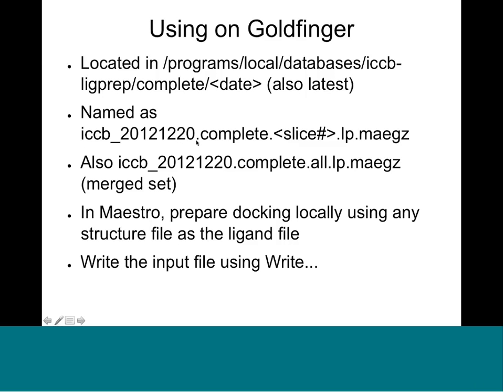In this directory, files are named ICCB-complete and then a slice number — one through 15 or 16 — with LP for LigPrep, stored as MAE GZ files. For this particular set there's also a complete merged file of all 300,000 compounds. That can be useful if you want to run everything at once so you don't have to put results back together at the end. This set is small enough that we can do that.